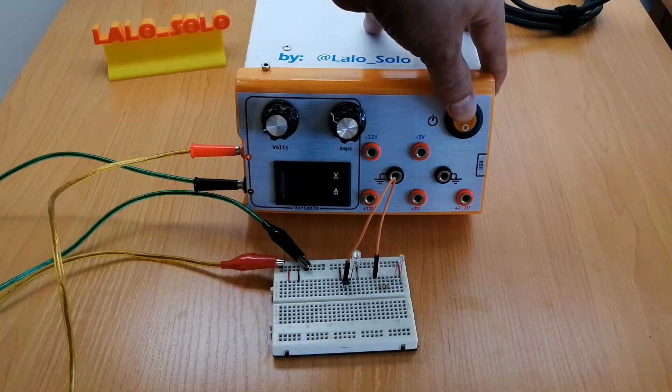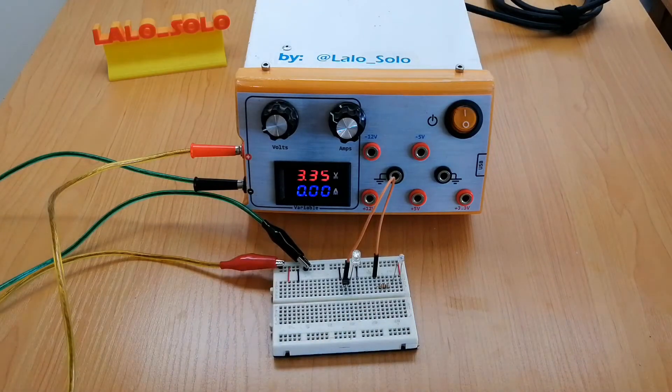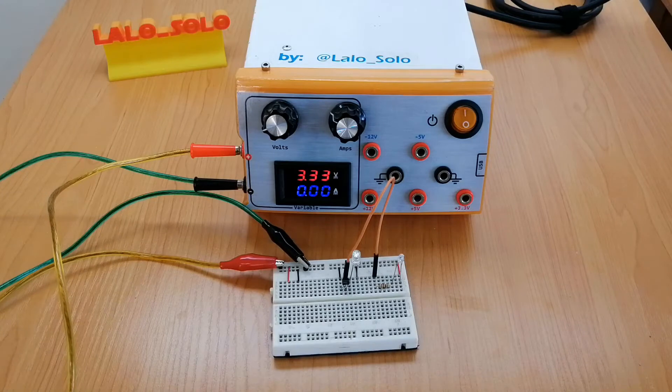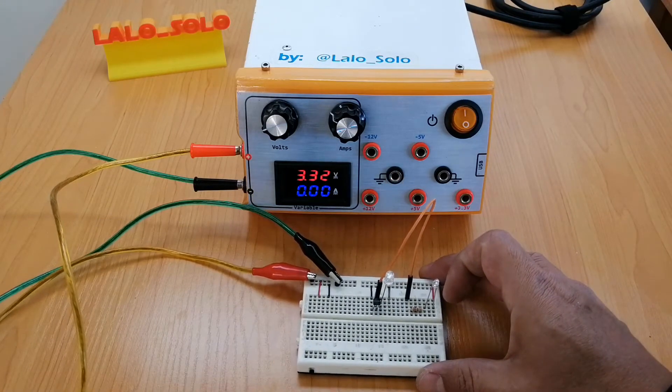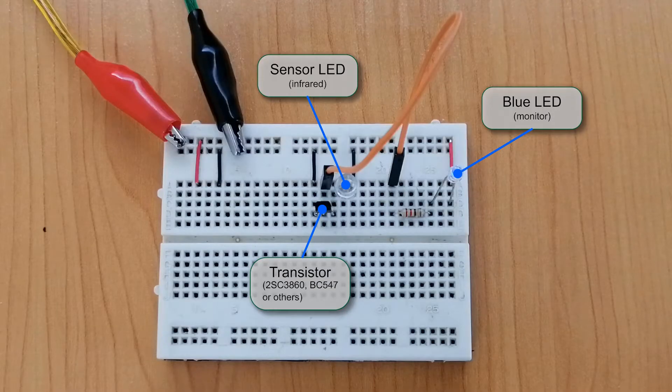We are powering the circuit with this same voltage on the camera. It has a sensor LED on the left and the monitor blue LED on the right which turns on when sensor is being hit by the laser.